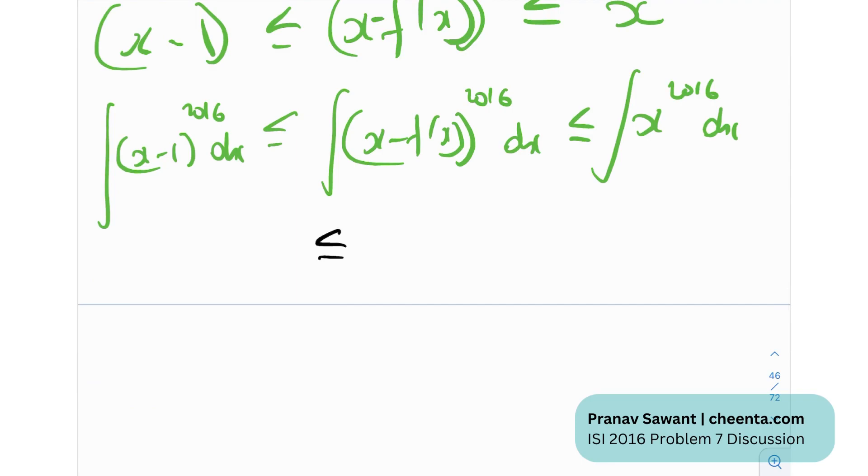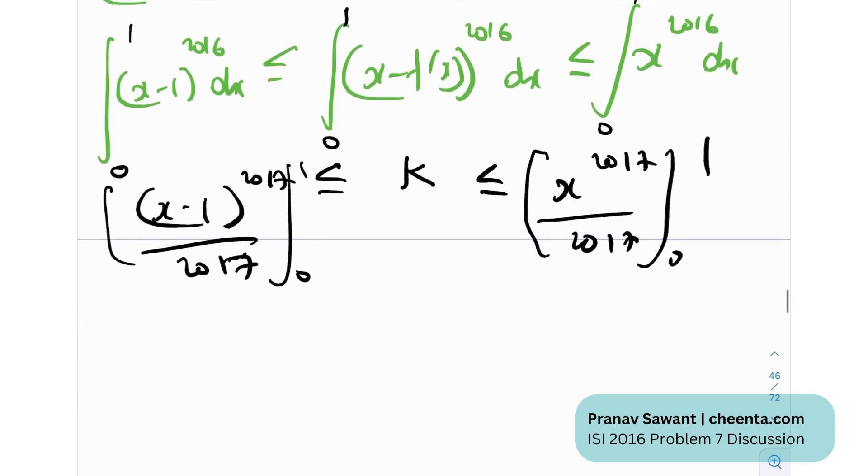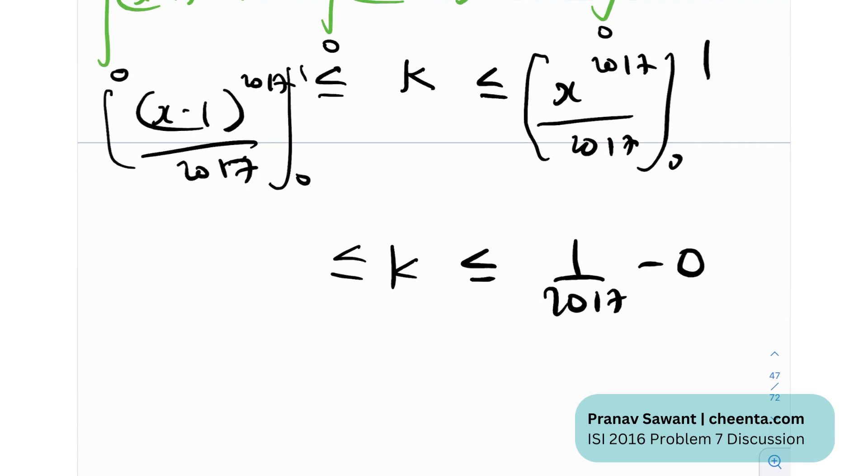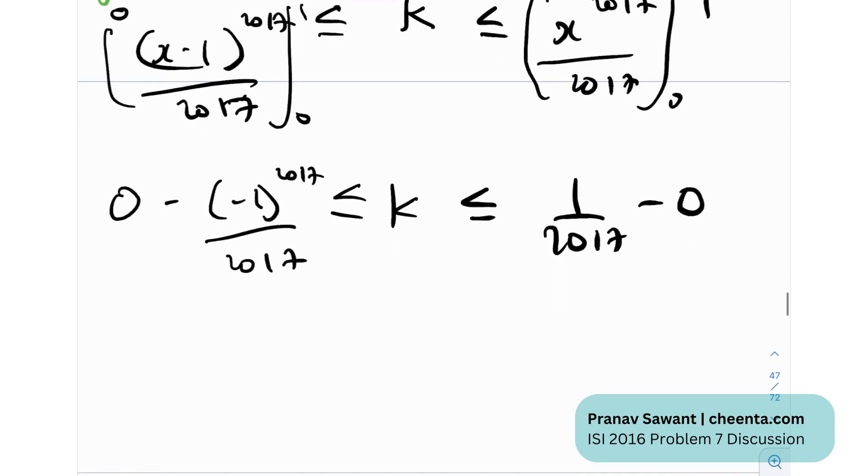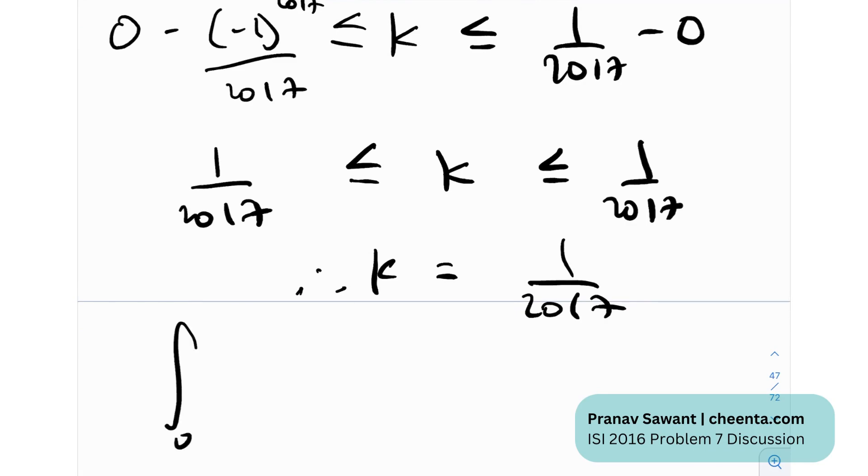Now what we can do, we can just calculate the value of this integral. Let me write this as k, because essentially we need to find that. And this is nothing but x^2017 dx. If I just plug in the limits, limits will be 0 to 1, 0 to 1, and 0 to 1. This is x^2017/2017 with the limits from 0 to 1. So k is less than or equal to 1/2017 - 0, and k is greater than or equal to 0 minus (-1)^2017/2017. So k is less than or equal to 1/2017, and k is actually greater than or equal to 1/2017. Therefore, k is in fact 1/2017. Therefore, the value of this integral from 0 to 1 of (x - f(x))^2016 dx is actually 1/2017.